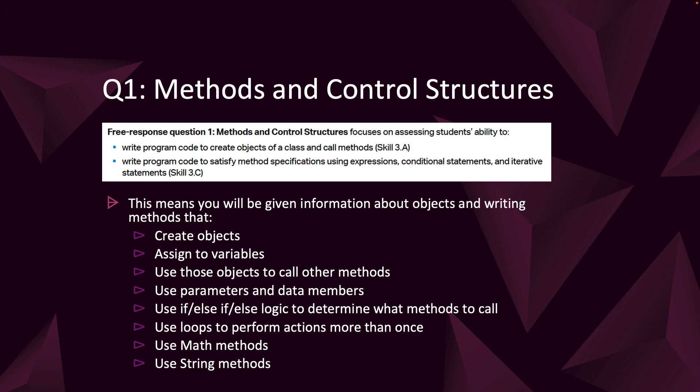For Q1, you're going to write code that will create objects of a class and call methods. You're going to make objects with variables and assign that object to a variable by calling new and the constructor. Then you're going to use those objects to call other methods. You will use parameters or data members. You'll be using if, else if, or else logic to help determine which methods to call. You might be using loops to perform actions more than once. You might use math methods like .abs or .sqrt, or string methods like .substring or .indexOf to calculate information.